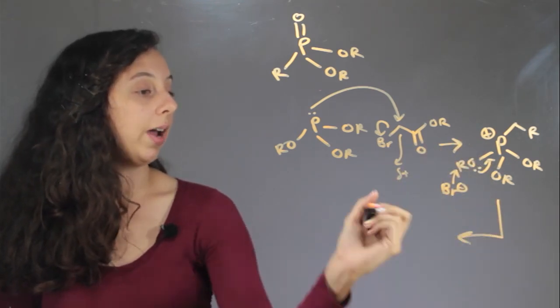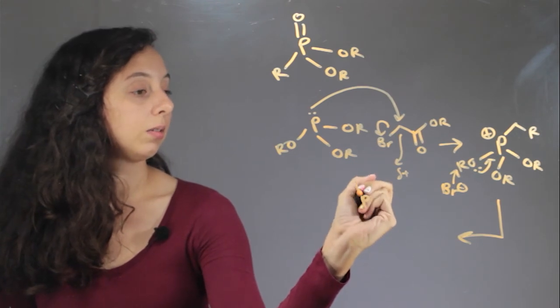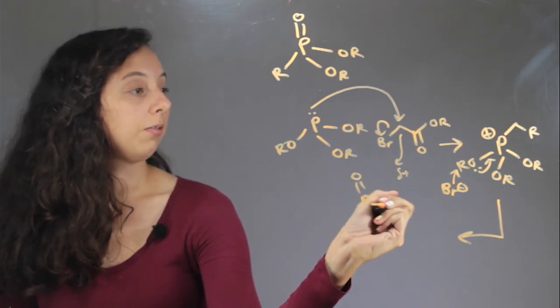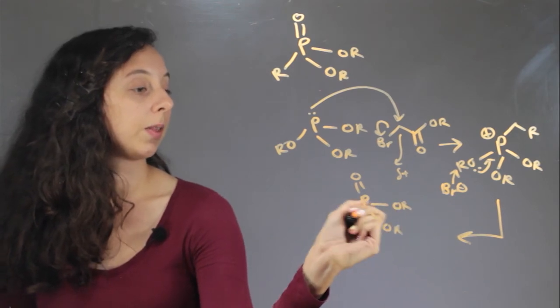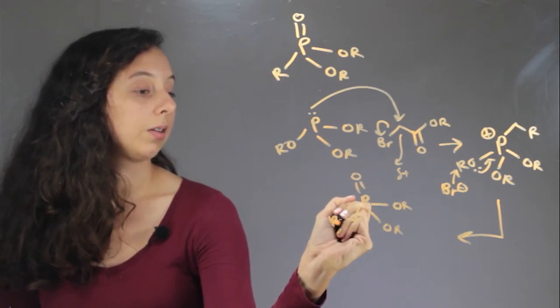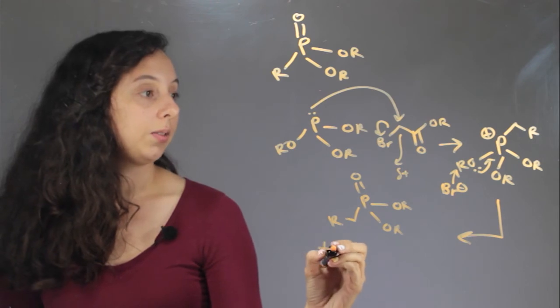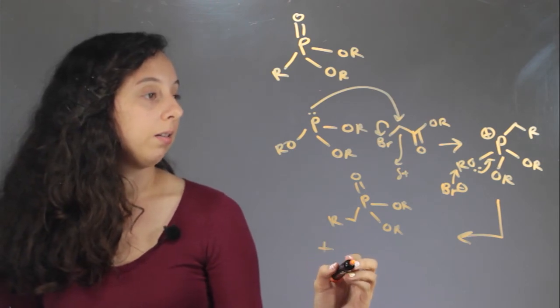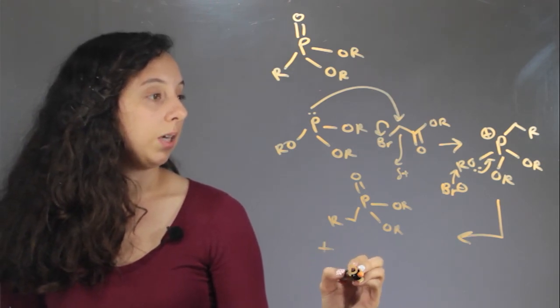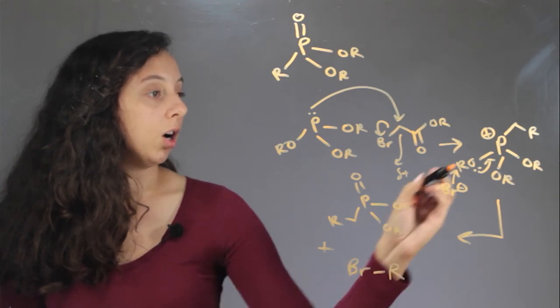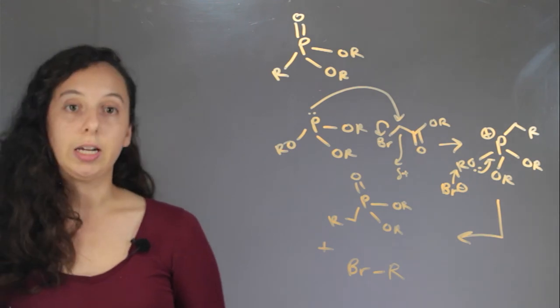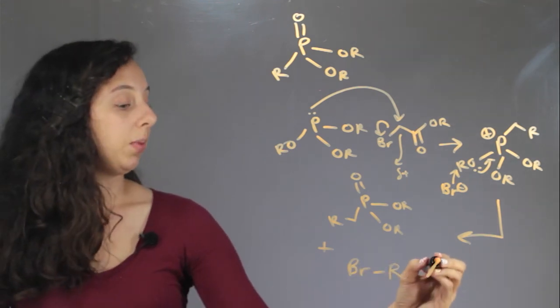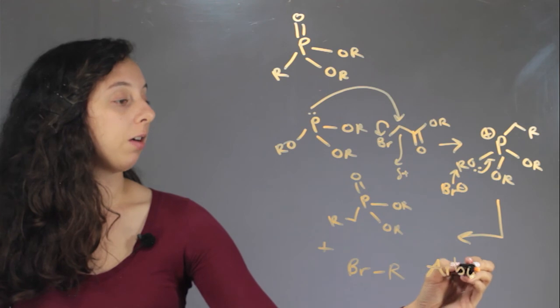So your end product is your phosphonate. So two OR groups, your regular R group plus it's going to have BR and whatever your OR group was. So this is actually a named reaction. Its name is the Arbuzov reaction.